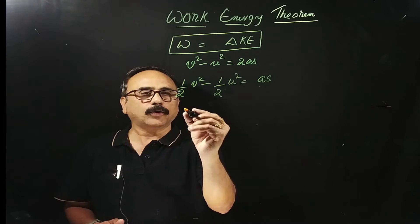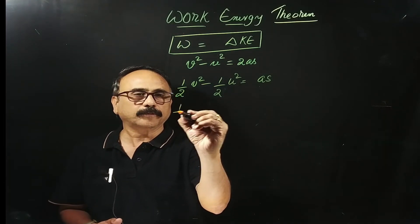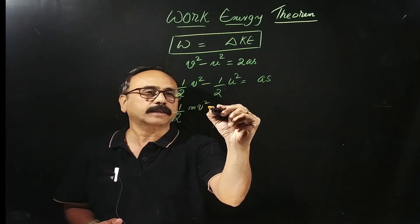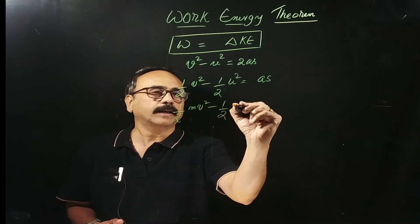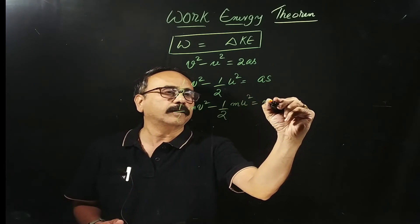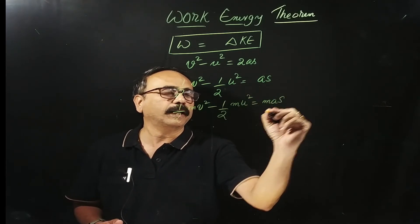Now, if you multiply throughout by M, half M V square minus half M U square is equal to M A S.